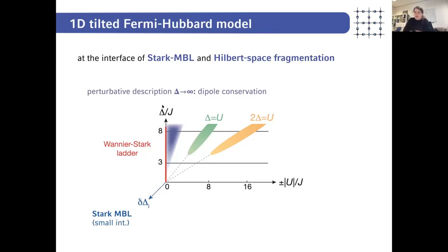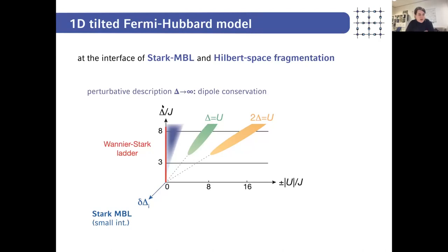All these colored regions highlight that the model can show very complex dynamics, because tilting the lattice can create many long-range tunneling resonances whenever the tilt energy resonates with the Hubbard interaction energy. It's unusual to expect non-ergodic behavior on very long timescales away from the large-tilt limit. Initially we expected to see Hilbert space fragmentation only for very large values of the tilt — perhaps delta over J around 50 — which would be very hard to observe experimentally.